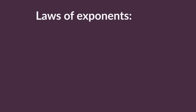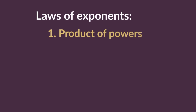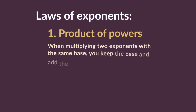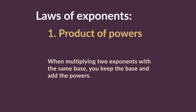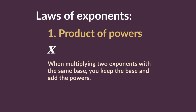The following are the laws of exponents. The product of powers law states that when multiplying together two exponents with the same base, we keep the base and add the powers. This is written as x to the power of m multiplied by x to the power of n equals x to the power of m plus n.